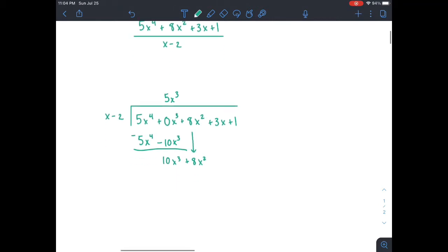And now again, we see how many times does x go into 10x cubed? That's 10x squared. And we distribute that, and we get 10x cubed minus 20x squared. And then we subtract and get 28x squared.